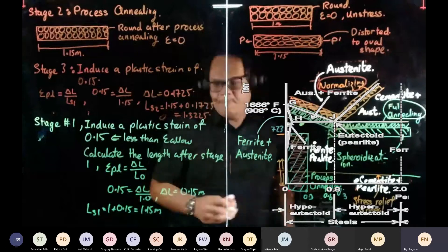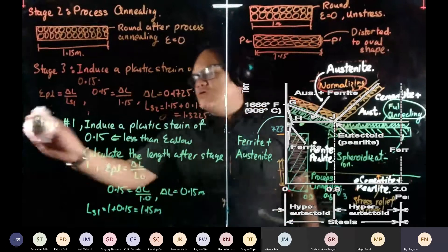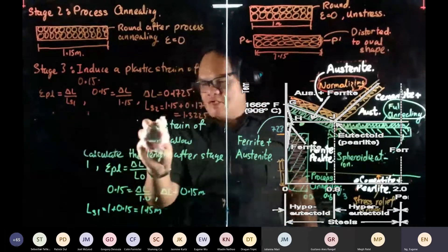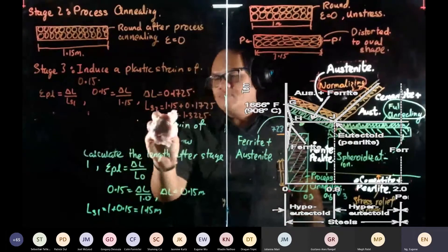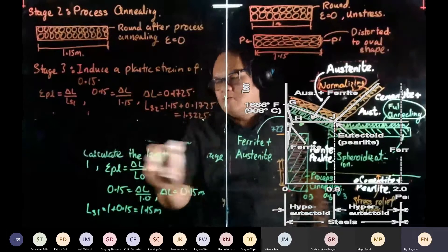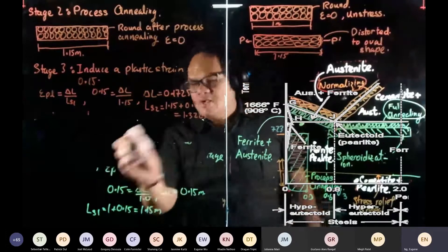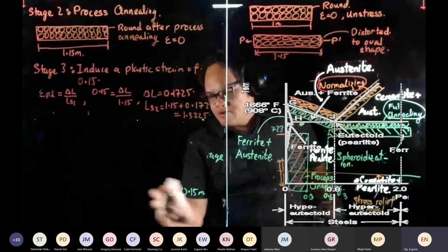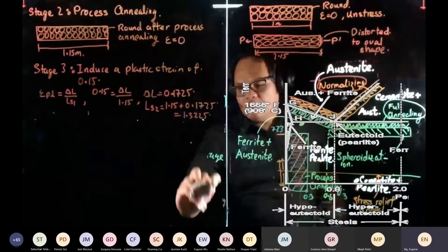Go to stage four, then go to stage one — I'm not going to repeat myself — then go to stage four again. Carry out what process? Annealing. So on and so forth.